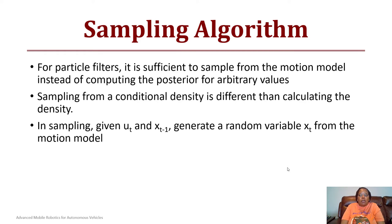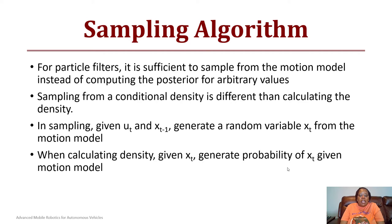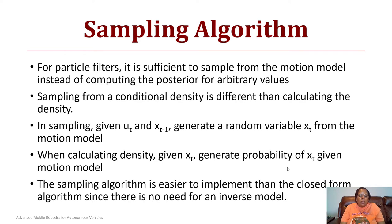In sampling, given a control input ut and a current previous state x of t minus one, you want to generate a random variable xt from the motion model that represents the current state of the robot. When calculating the density, given xt, you want to generate a probability of xt given the motion model to determine the probability that it's a good value.